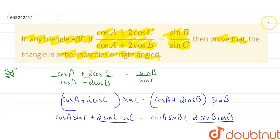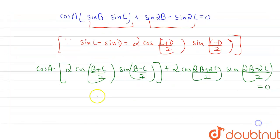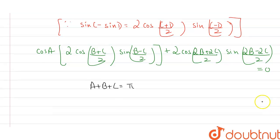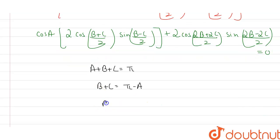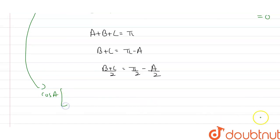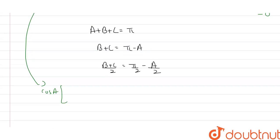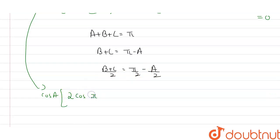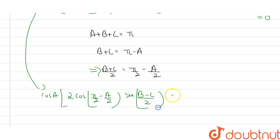Since triangle ABC has angle sum A + B + C = π, we get B + C = π - A, and therefore (B+C)/2 = π/2 - A/2. Substituting into our equation: cosA · 2cos(π/2 - A/2) · sin((B-C)/2) + 2cos(B+C) · sin(B-C) = 0.